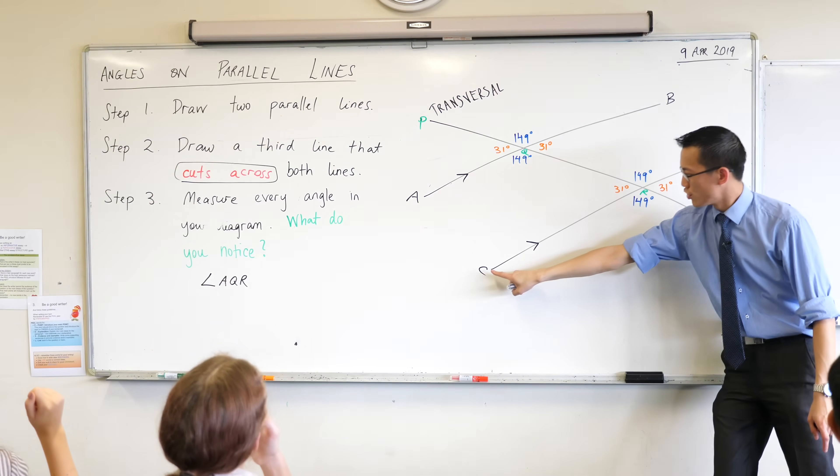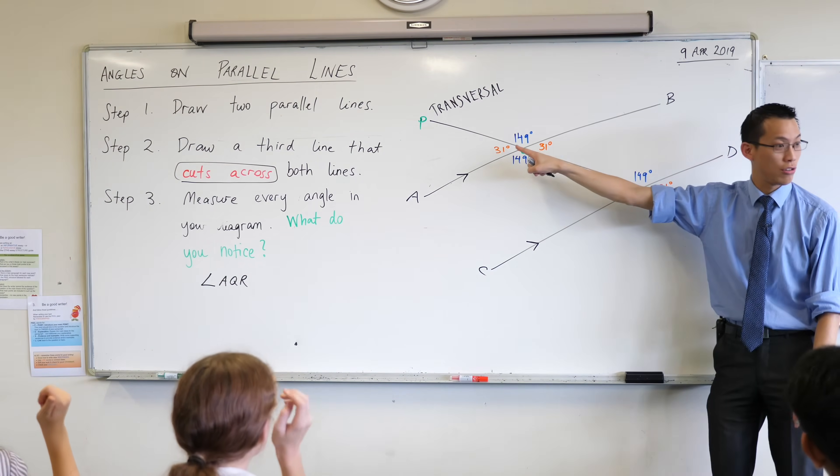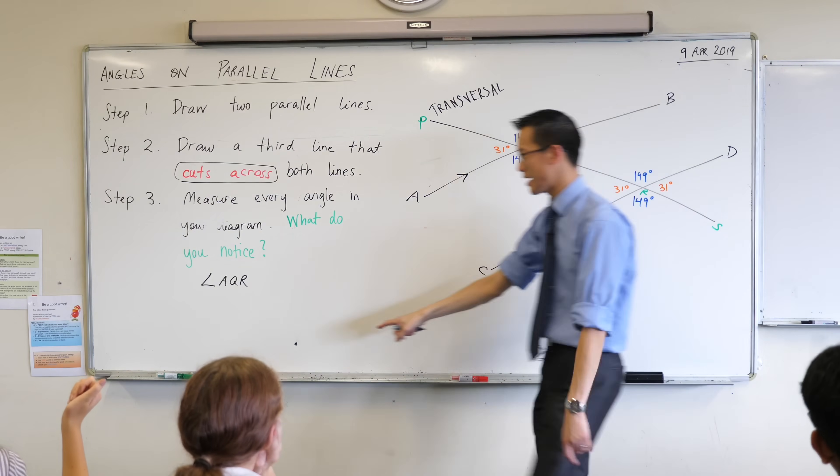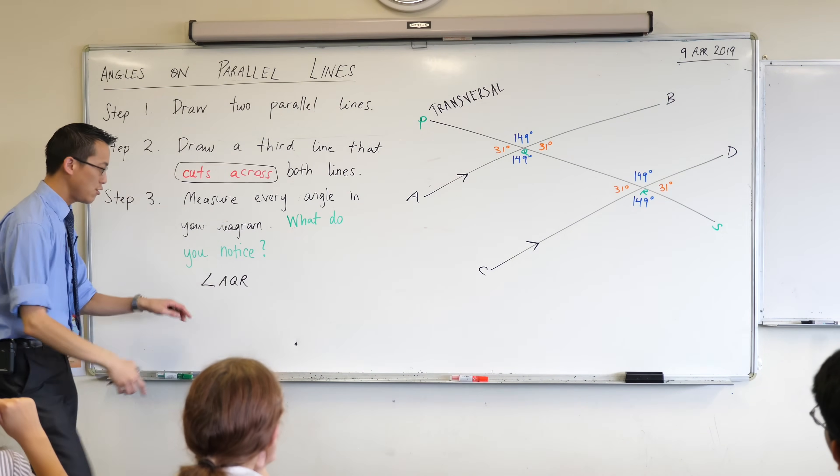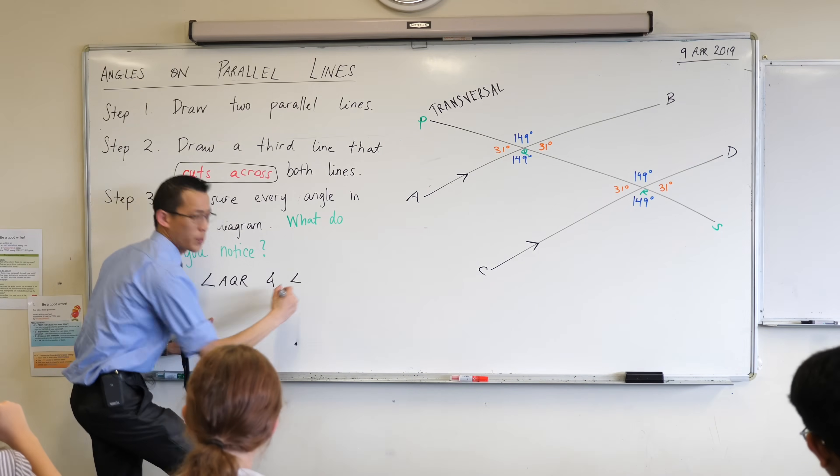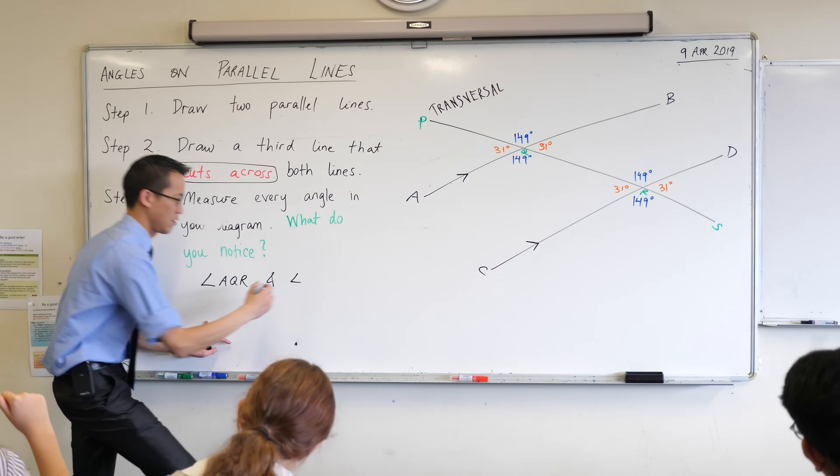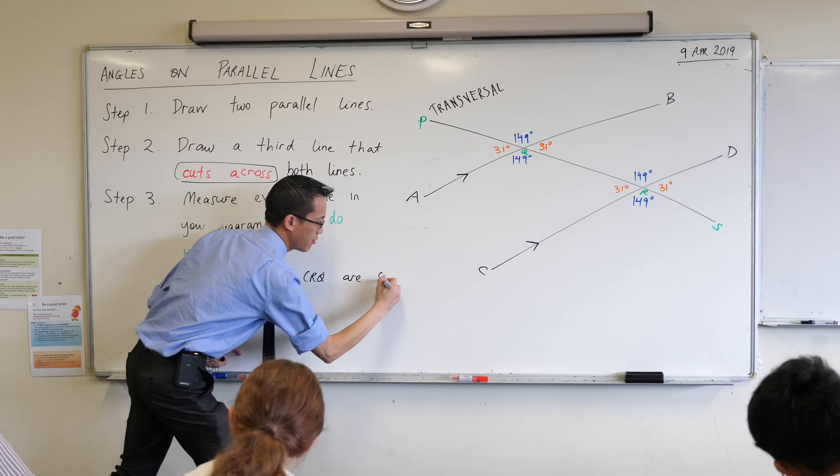But Leah what do you see that's co-interior? CRQ is the co-interior. CRQ. Do you agree with that? CRQ? Okay fantastic. So I can write angle AQR and angle what did we just say? CRQ? CRQ are co-interior.